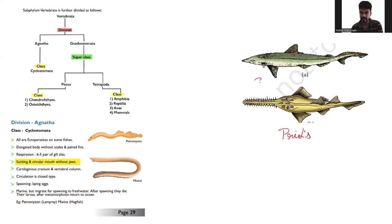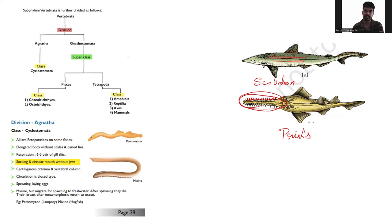Pristis is an example where you can see teeth projected outwards — very sharp and very strong. The scales are also very strong. You can find these details in the Memonite notes and Memonite app.